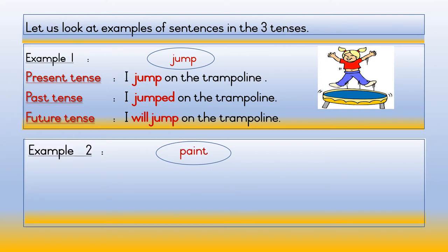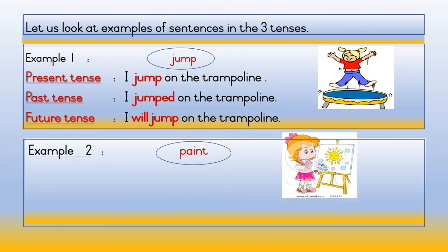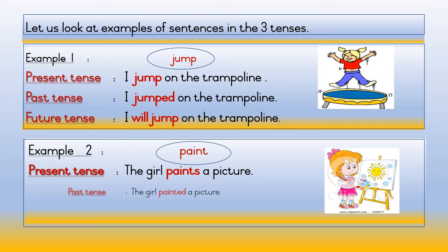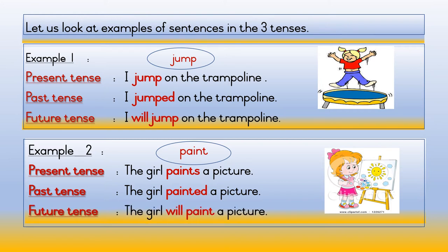Example two — the word is 'paint.' Present tense: The girl paints a picture. Past tense: The girl painted a picture. Future tense: The girl will paint a picture.